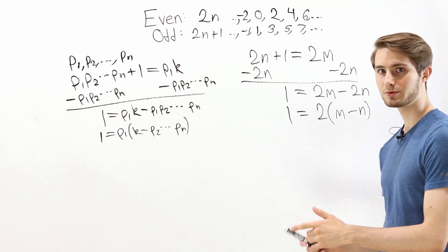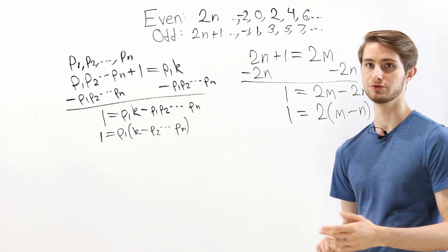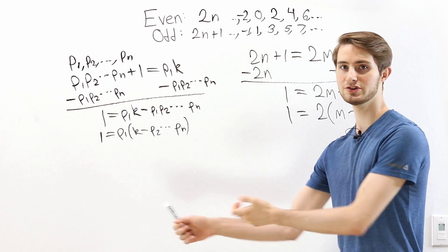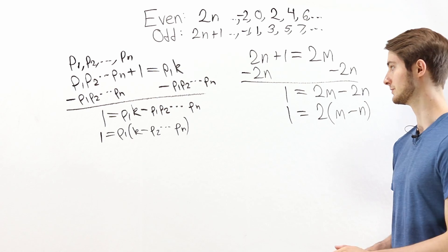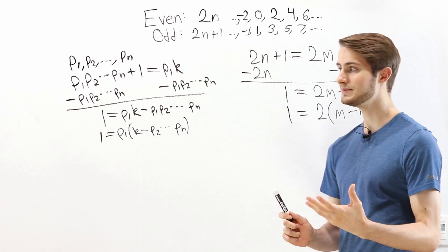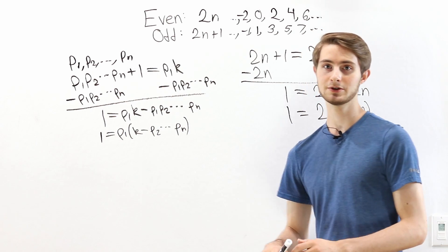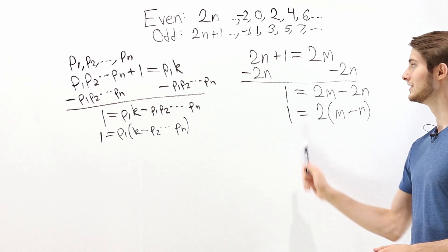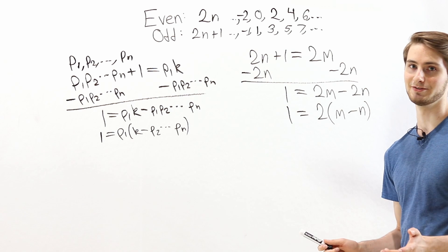And this is what I think is so cool about proofs. Using the same techniques in many different situations, we can get a ton of different results. We used this same technique to prove that there are infinitely many prime numbers as we did to prove that odd numbers are not even.